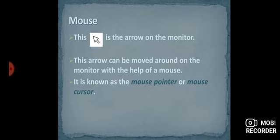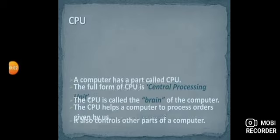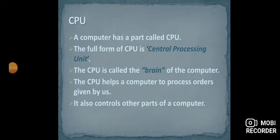Next we have the picture of the mouse. You can see this is the picture for the mouse. I hope this is clear to everyone. Next we talk about CPU. A computer has a part called CPU.